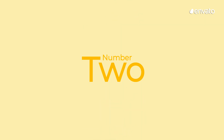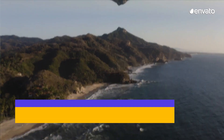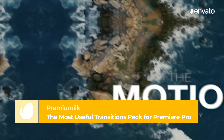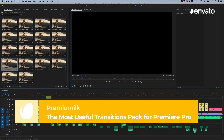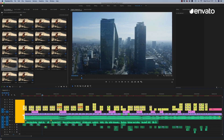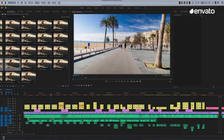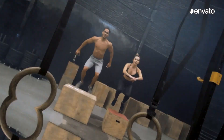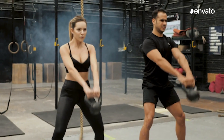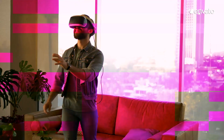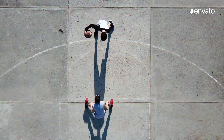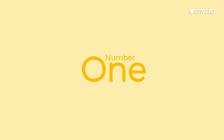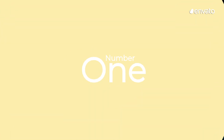Number 2 – The Most Useful Transitions Pack for Premiere Pro by Premium Milk. Amateur filmmakers, travel vloggers, and cinematographers of all levels can use this transition pack to create daring video content for their chosen platforms. Zooms, swipes, glitches, lights, rolls, and plenty of other useful transitions make up this seriously versatile pack.